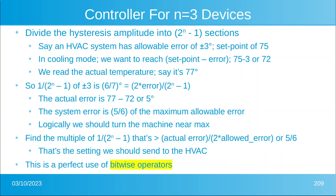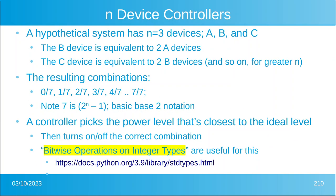We need to find the multiple of one-seventh that is greater than five-sixths — that's the setting to send to the HVAC. But because there are three devices, we have to send three bits or three numbers. In our hypothetical system with three devices A, B, and C, device B is equivalent to two A's, and device C is equivalent to two B's, giving combinations of zero-sevenths, one-seventh, two-sevenths, three-sevenths, and so on.